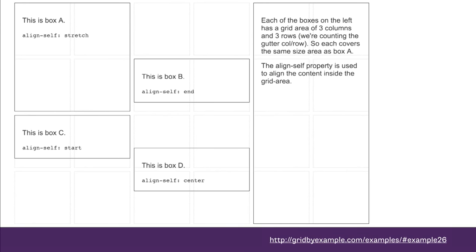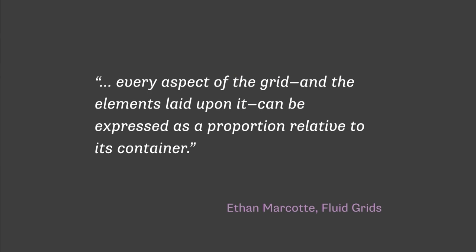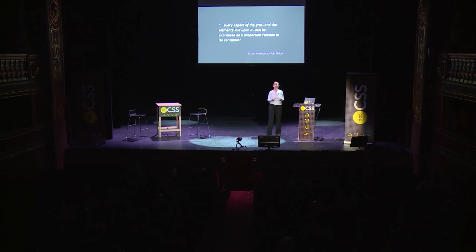Just like with Flexbox, we have the align-self and justify-self properties, which allow us to target individual grid items and change their alignment rather than doing everything as one big group. Box A is showing the default stretch — it's covering the whole area. Then we've got one set to align-self end, one align-self start, and one align-self center. Being able to align groups and individual items is really vital for responsive design, and it's where a lot of the hacks around floats and positioning that we've used for static layouts started to fall down.